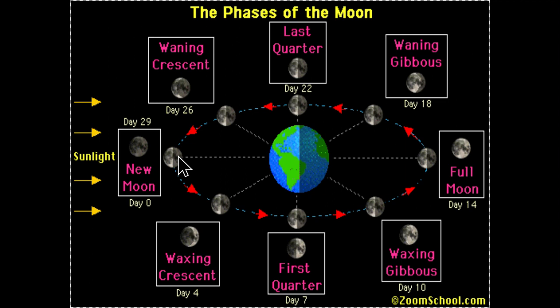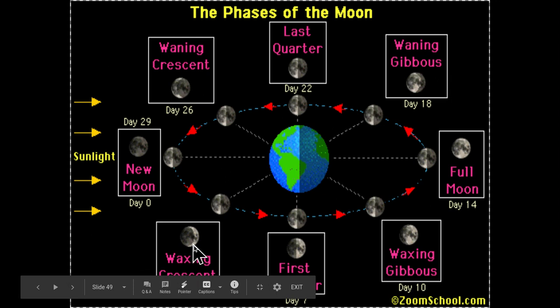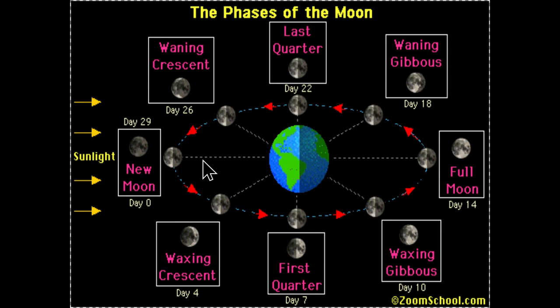Because the Earth is spinning faster than the moon goes around it, after four days the moon moves to a new position. Looking at it from Bakersfield, we start to see the illumination of the moon begin to show. This phase is called the waxing crescent phase. The term waxing means increase — the illumination of the moon is increasing. So it starts in its waxing, or increased illumination, phase.